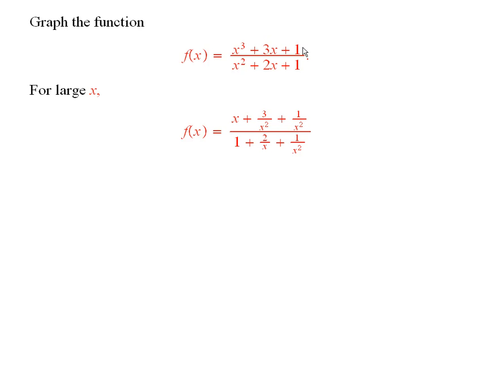If you divide the top and the bottom by x squared, you get this. Now, if you let x get increasingly large, these expressions—the 1 over x squared, 2 over x, and so forth—these terms all will approach 0.